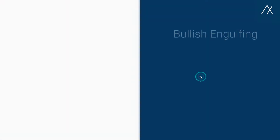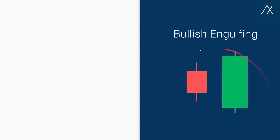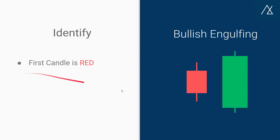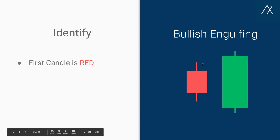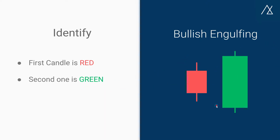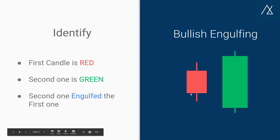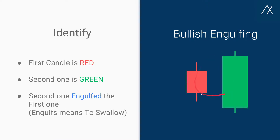We are starting with the bullish engulfing. As always, we'll see how to identify a bullish engulfing pattern. Step to identify: the first candle should be red in color, the second one should be green in color, and the second one should engulf the first one. For those who don't know what engulfing means, it means to swallow — the second candle has swallowed the first one. The primary condition is that the second candle's high and low should break both the high and low of the previous candle.